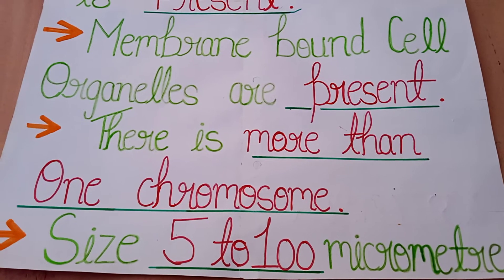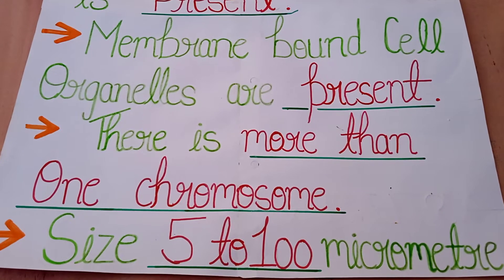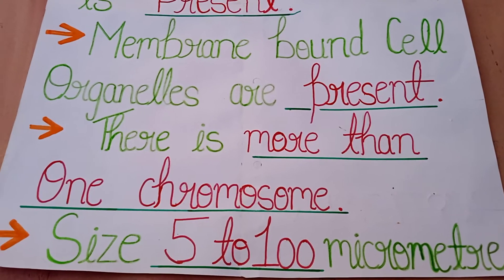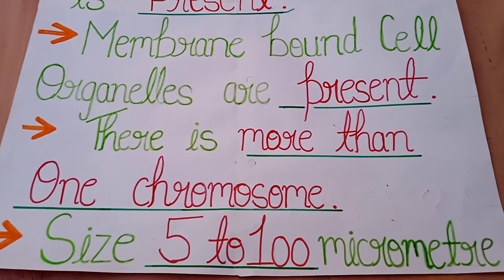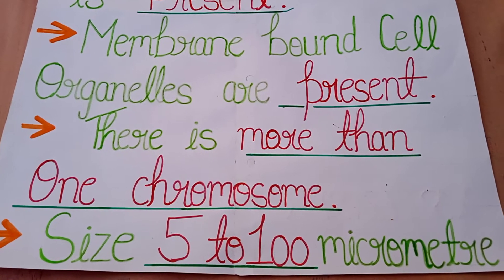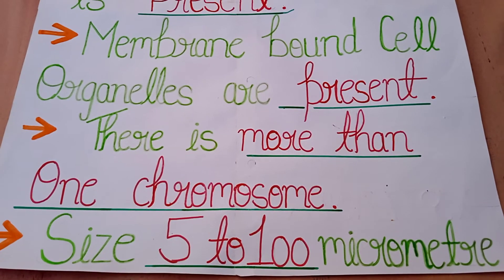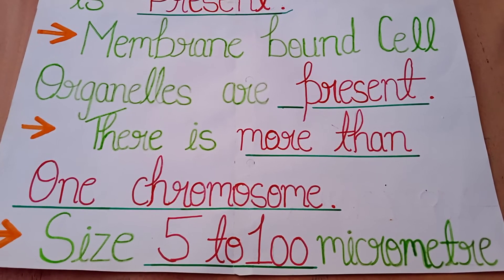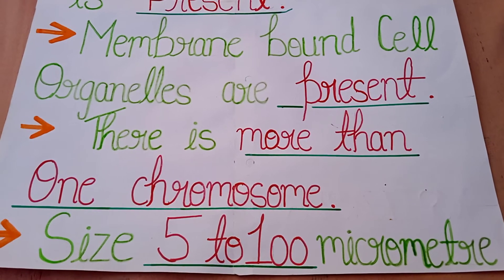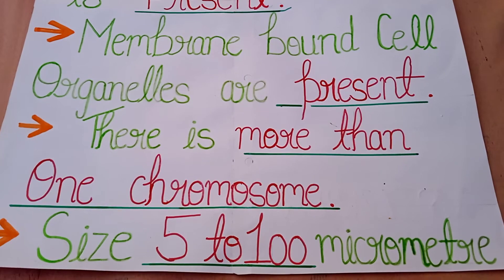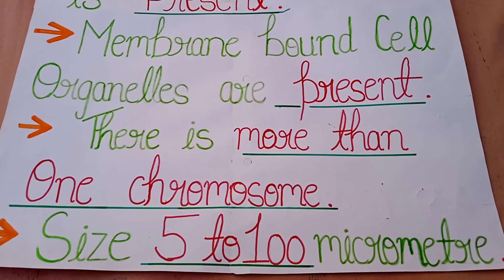The third point is membrane-bound cell organelles are present in a eukaryotic cell. Eukaryotic cell mein membrane-bound cell organelles present hote hain. Cell organelles like mitochondria, endoplasmic reticulum, ribosomes, lysosomes, etc.